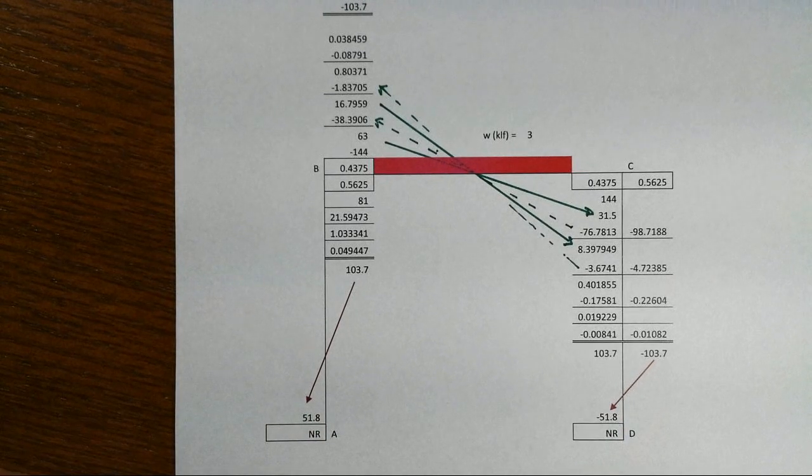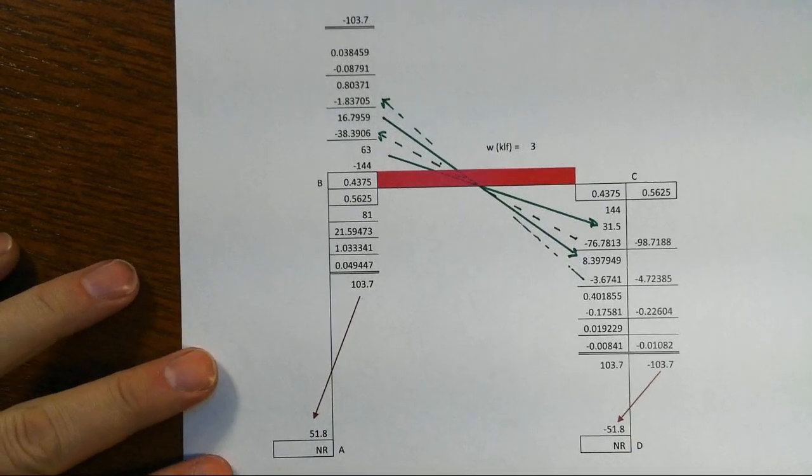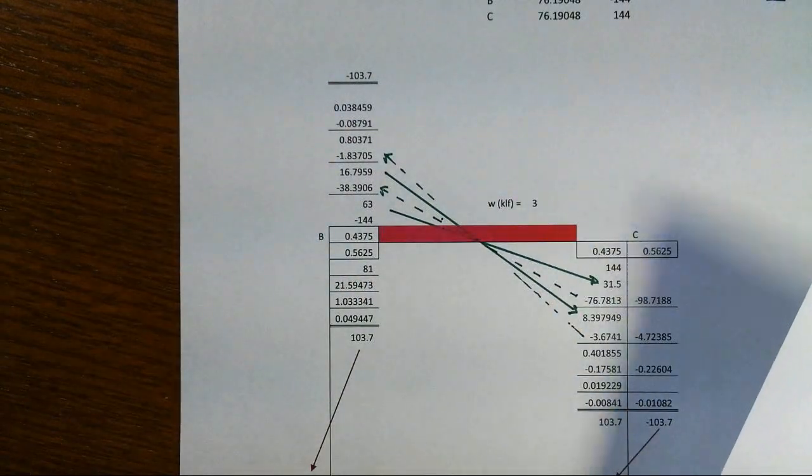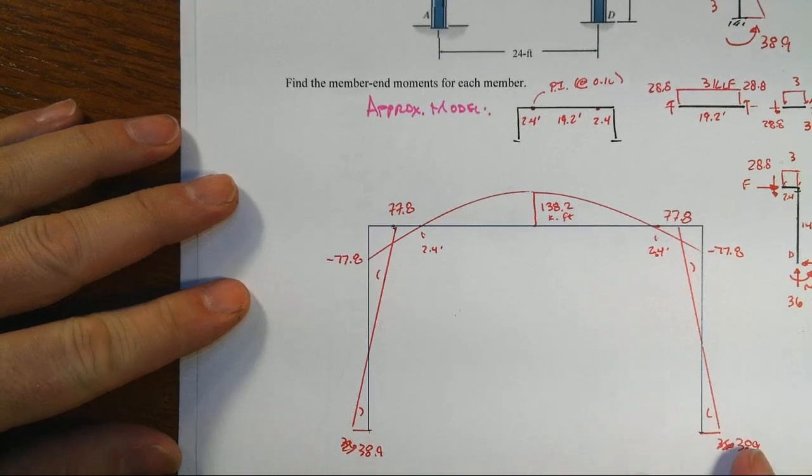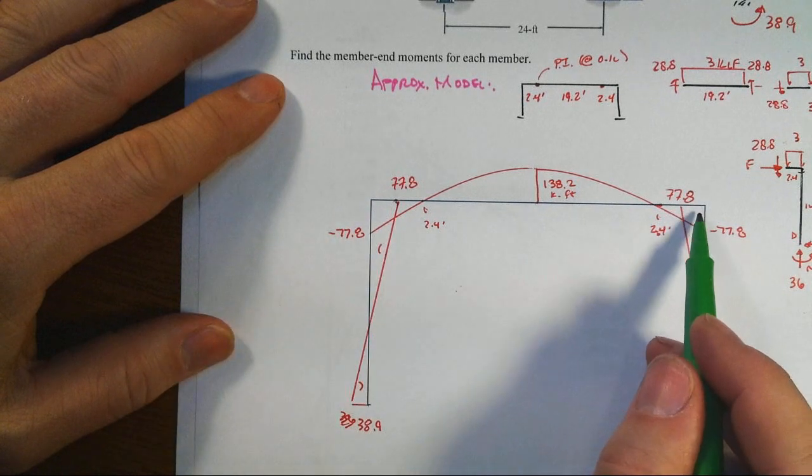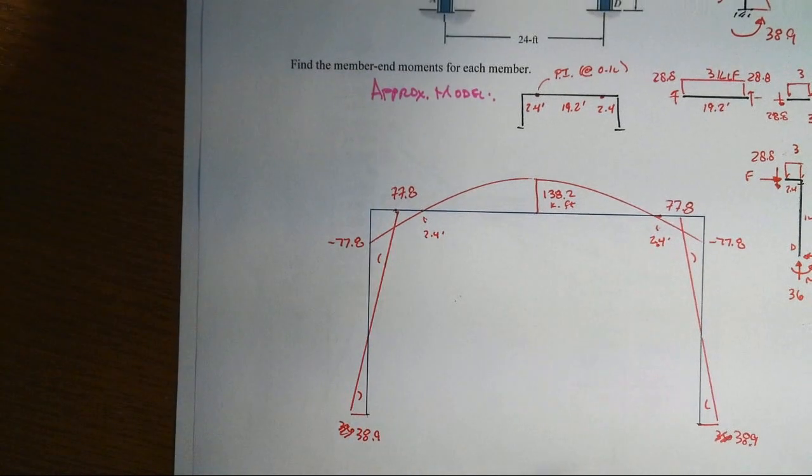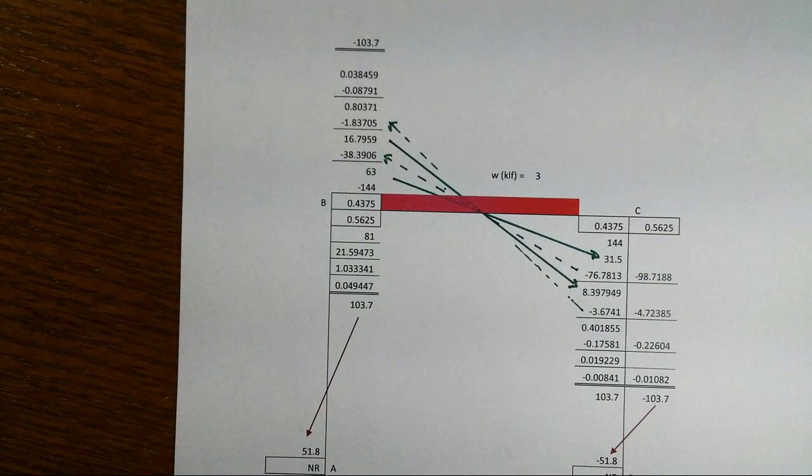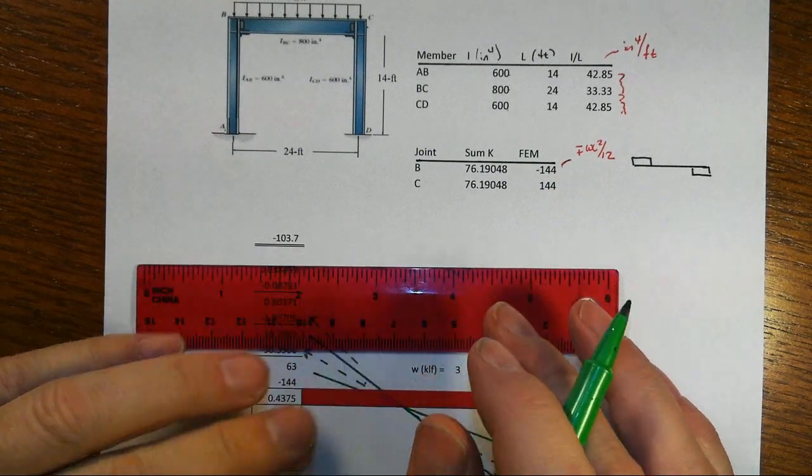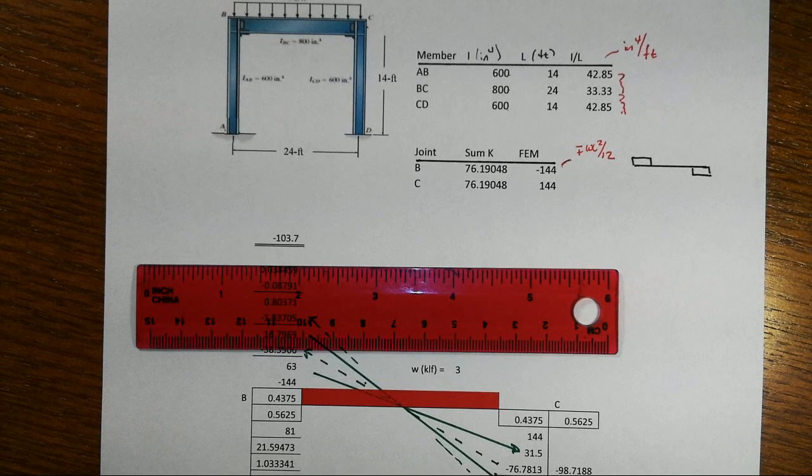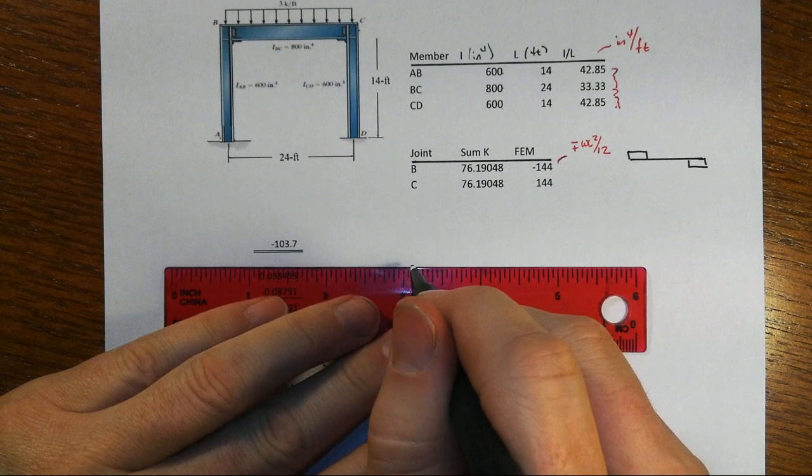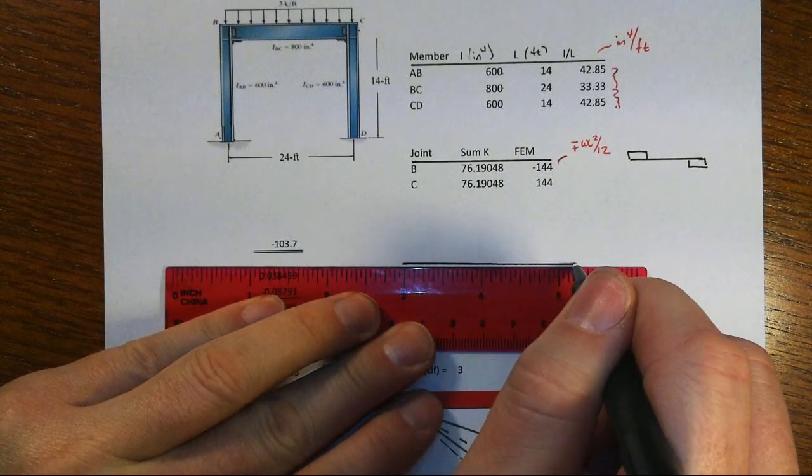Let's compare that to what our approximate answers were. Key thing here, 103.7 at B and the 51.8 down at the base. Our one-tenth rule said that we thought maybe we'd get about 78 at the joints and we would get about 39 down at the base of the columns. Hey, wait a minute. What's going on here? Well, let's go back and take a look at what this implication is for the equilibrium of that beam.